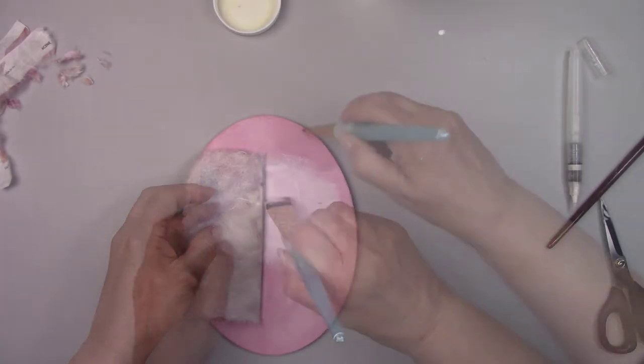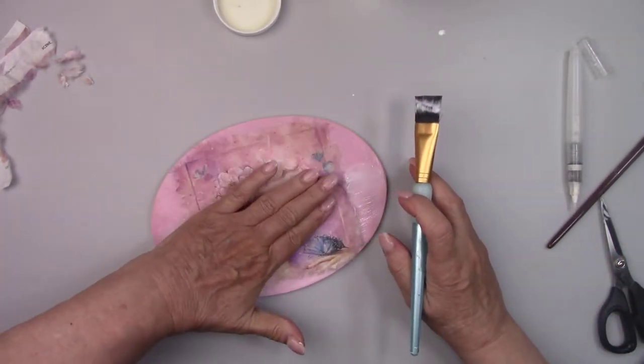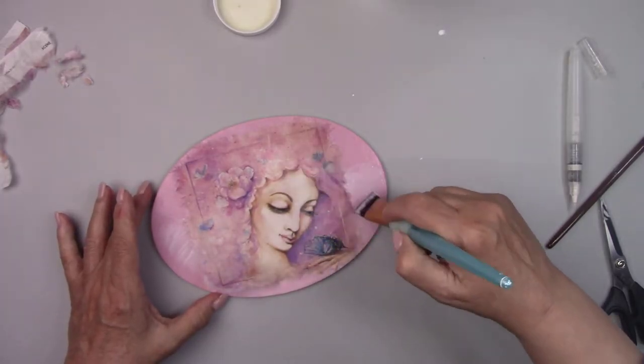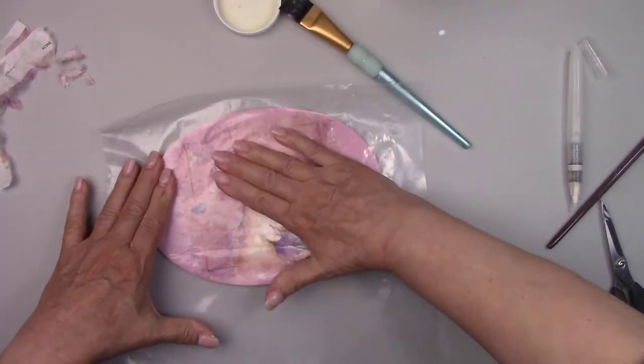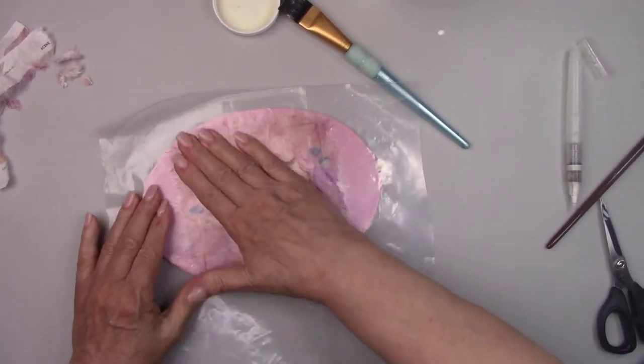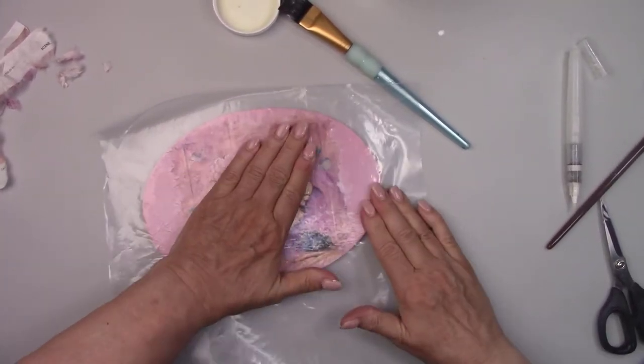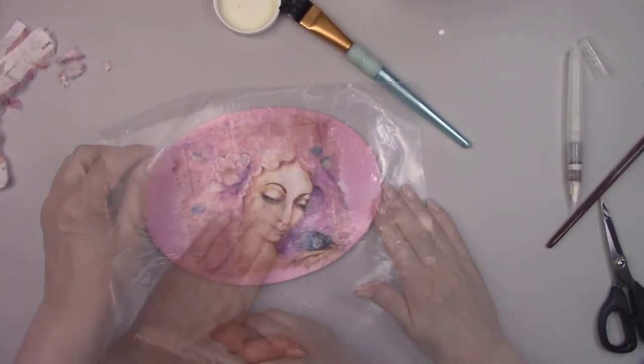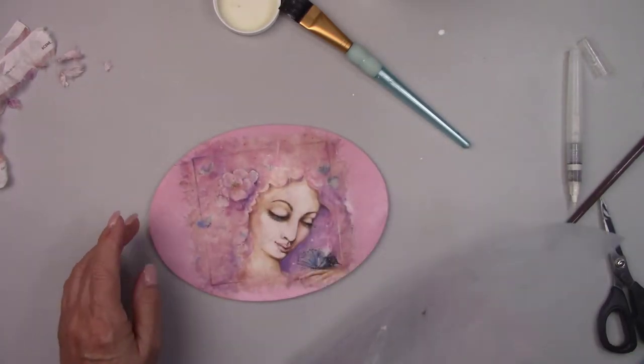Make sure you stick around so you can see how to decoupage your napkin easily with no wrinkles. When you're pressing down the picture, sometimes it can get a little bit sticky. If it does, I just put a piece of plastic over it and smooth it down that way. You can also put a little bit of water on the picture if you need to. When decoupaging, water is really your friend.